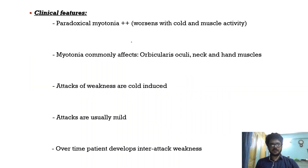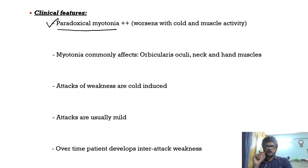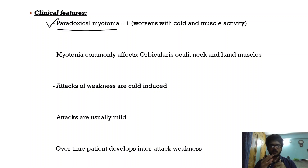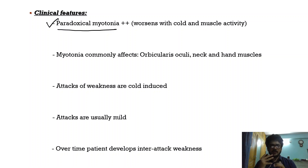Coming to the clinical features of paramyotonia congenita: patients have paradoxical myotonia. Myotonia is basically delayed relaxation after muscle contraction. Normally, myotonia improves or decreases after a period of muscle activity — this is known as the warm-up phenomenon. In paradoxical myotonia, the opposite occurs: the myotonia worsens with muscle activity, and it also worsens with cold.